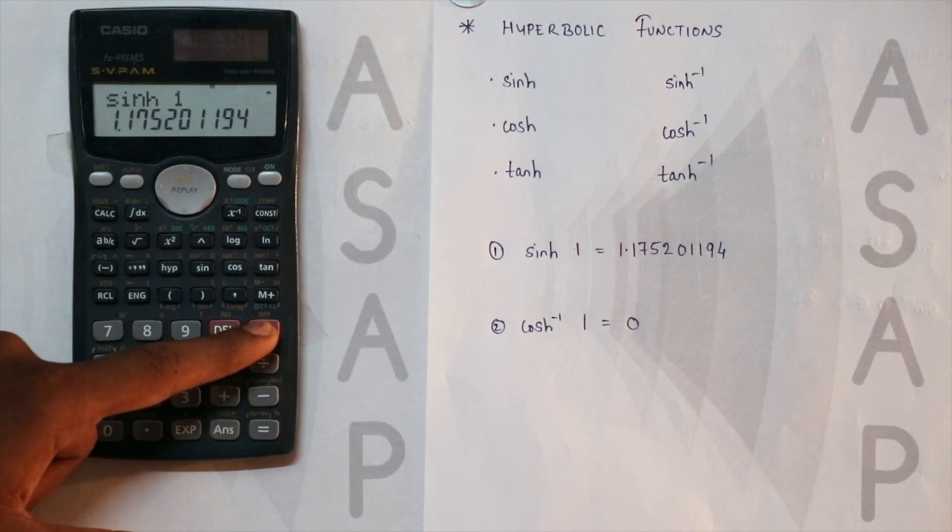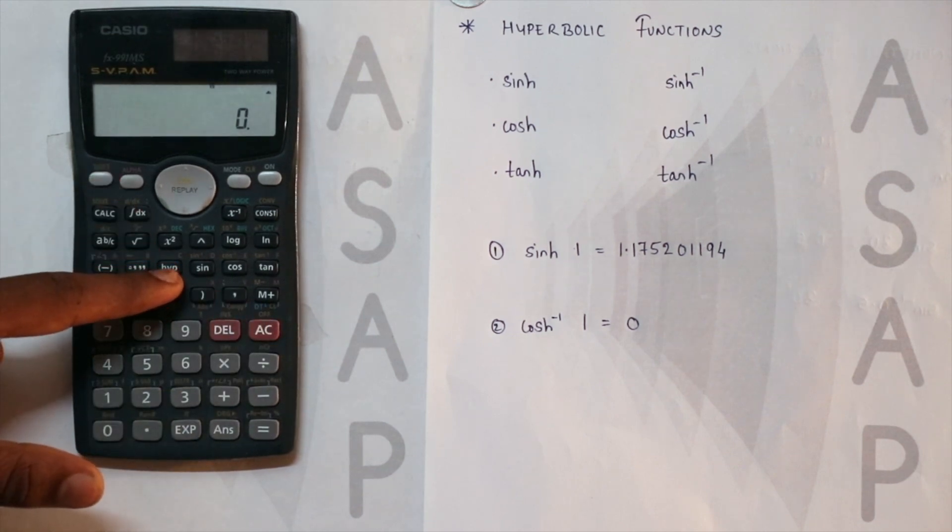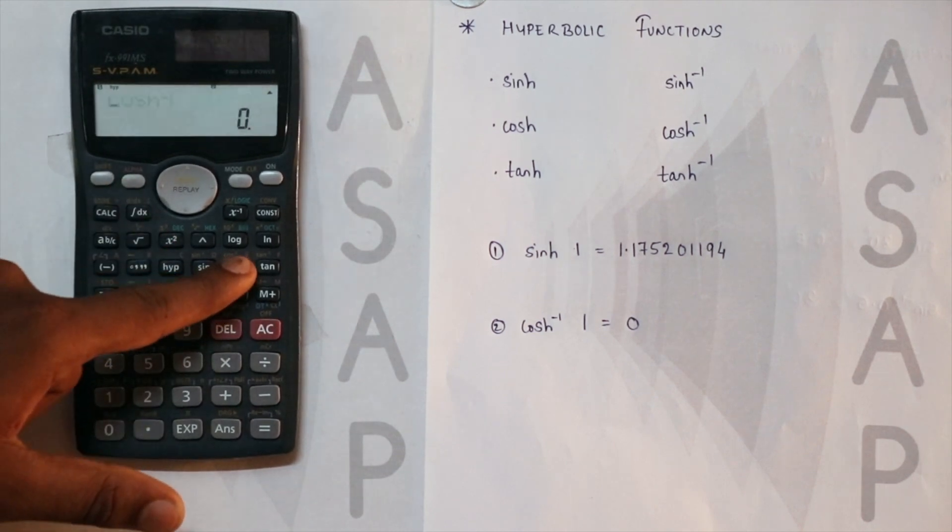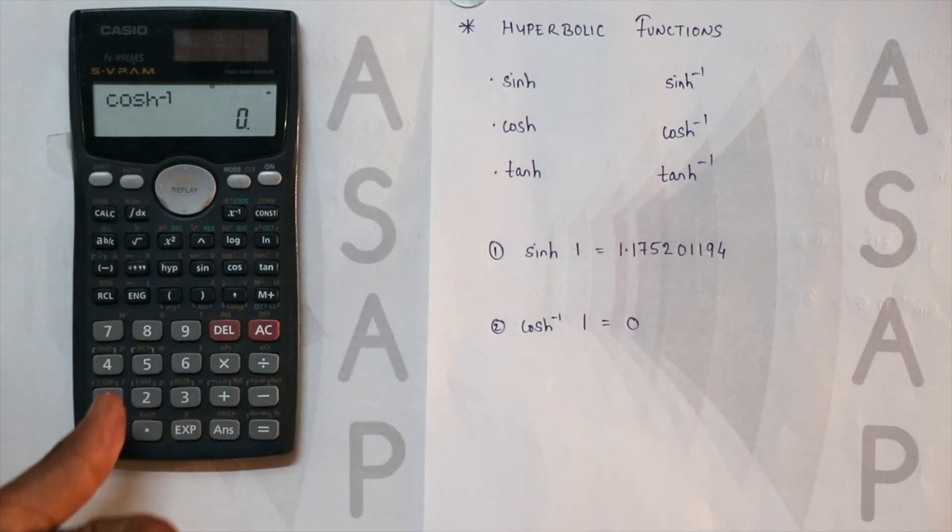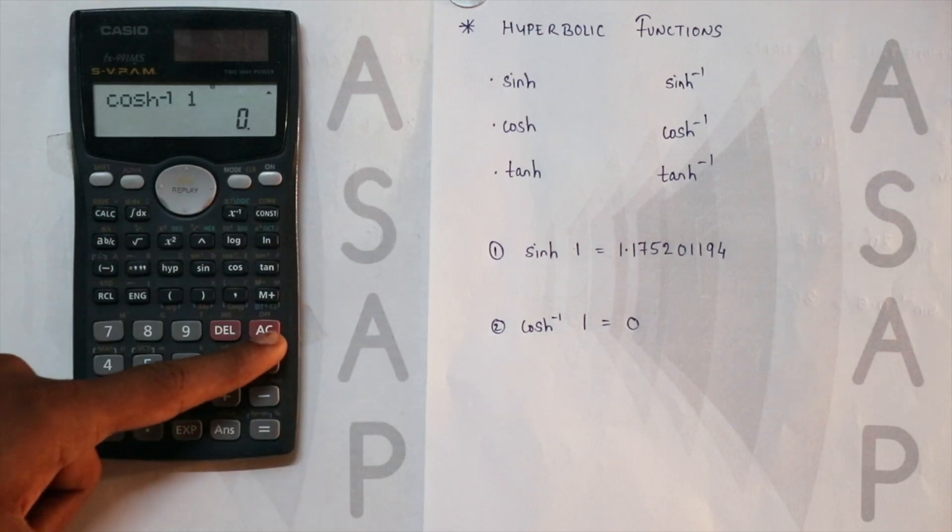Similarly, if you want to find the inverse, you press the hyperbolic button, then shift to cos. So inverse of hyperbolic function of cos and 1 equal to, you will get this answer.